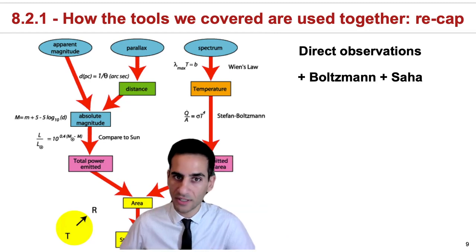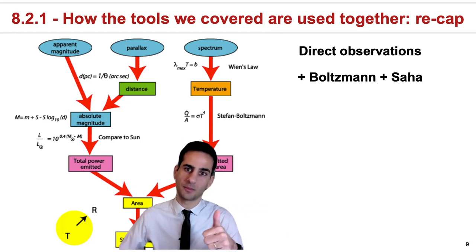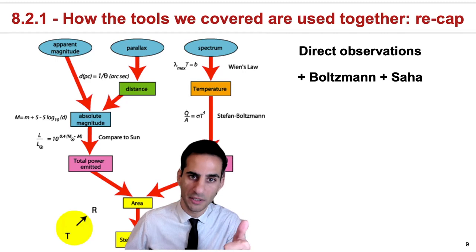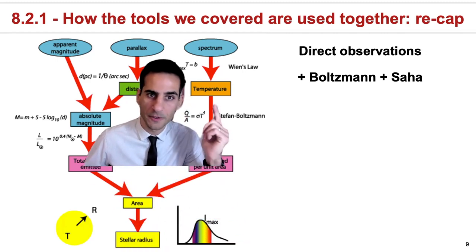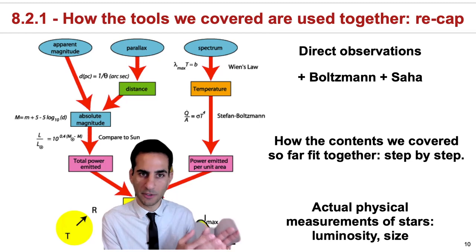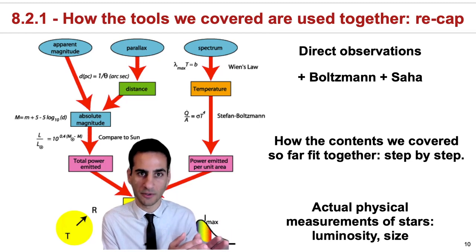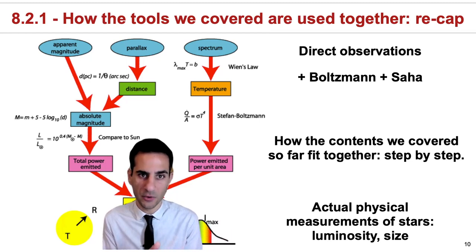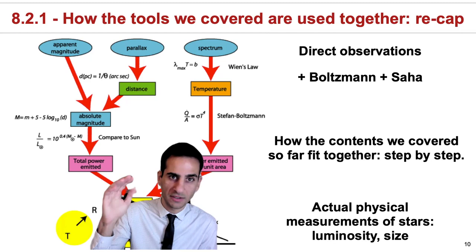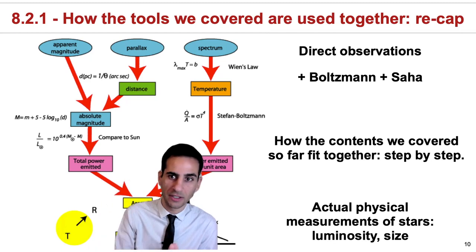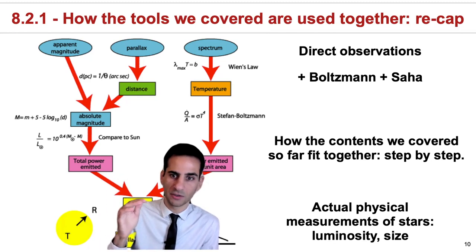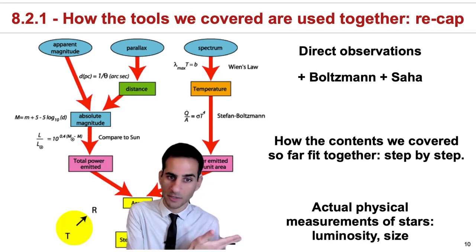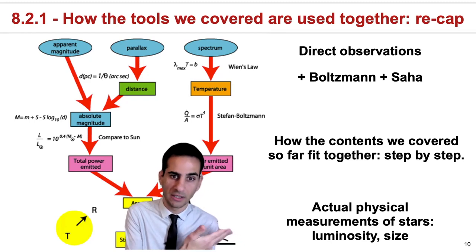We've also seen that by doing spectroscopy and exploring the Boltzmann and the Saha equations, we can also get a measurement of temperature spectroscopically. Throughout the previous sections we've seen many examples and questions where all these ingredients are put together, so that you can go from direct observations to the actual physical measurements of stars — such as luminosity and size.